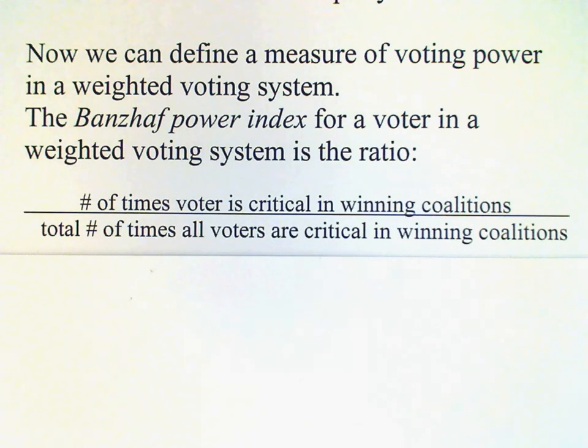The index is calculated as the following ratio: for each voter, you count up the number of times the voter is critical in all the winning coalitions, and then you divide by the number of times that all voters are critical in all the winning coalitions. You do that for each voter.